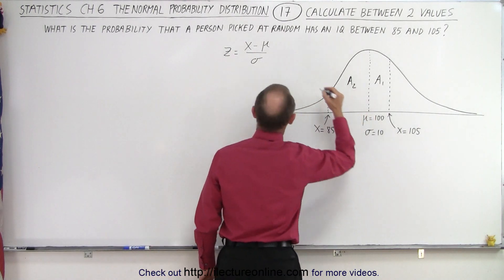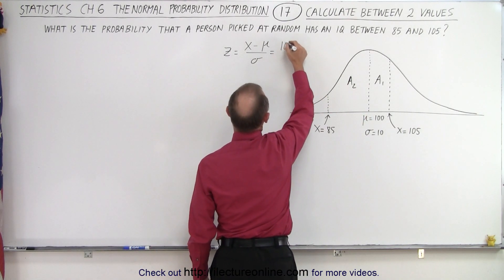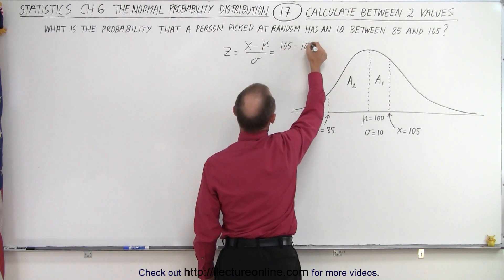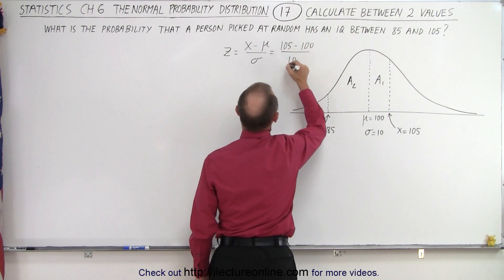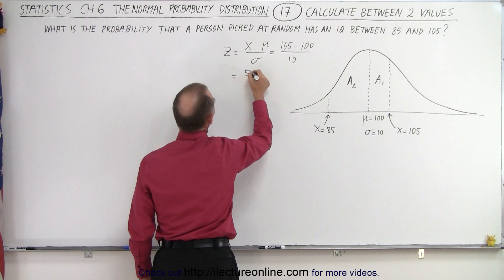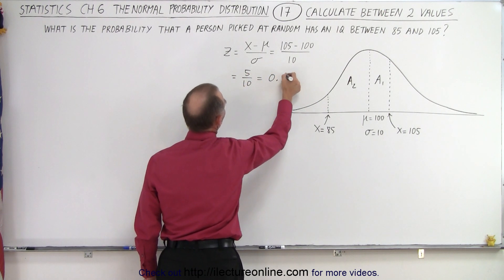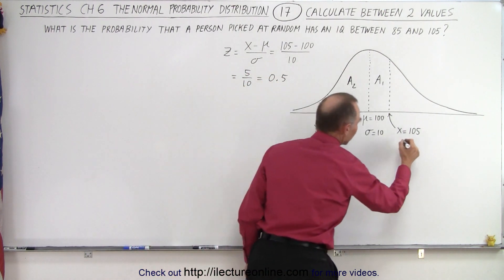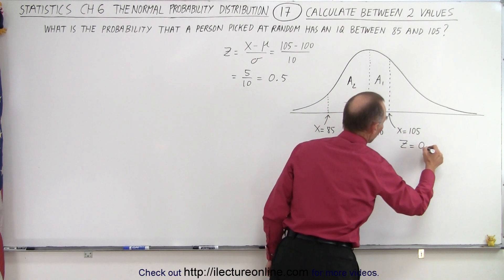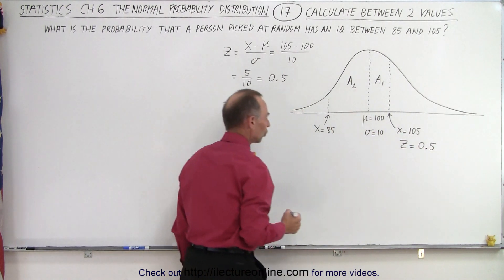For the first value here, we can say that's equal to 105 minus 100 divided by 10, so it would be equal to 5 divided by 10, which is equal to 0.5. So here, z equals 0.5 standard score.